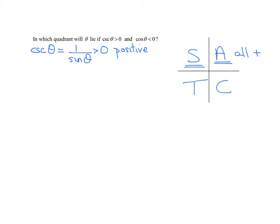The S in quadrant 2 means the sine of theta and the cosecant of theta, those are both positive. Everybody else is negative.